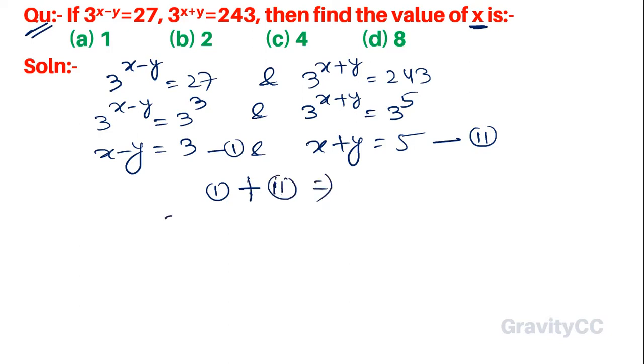Adding them, the y terms cancel, so 2x equals 8, and x is equal to 8 divided by 2, which equals 4.